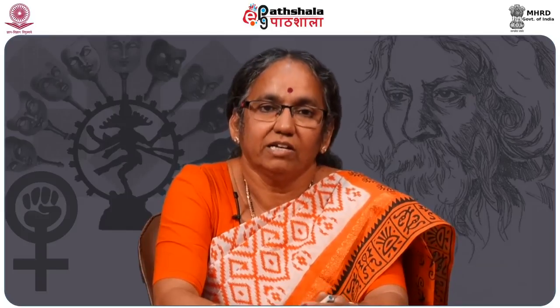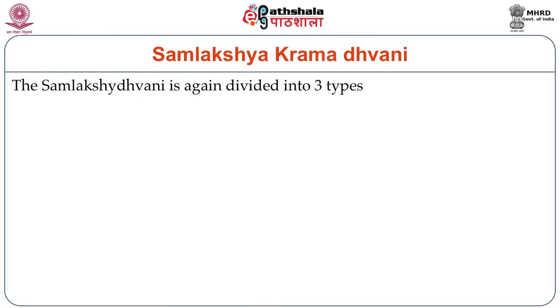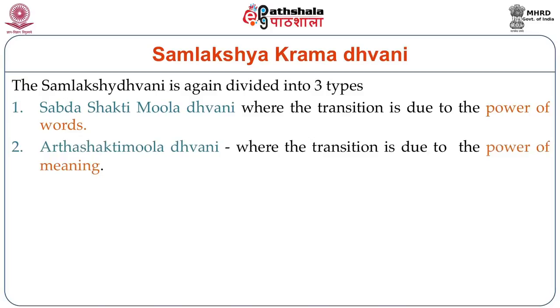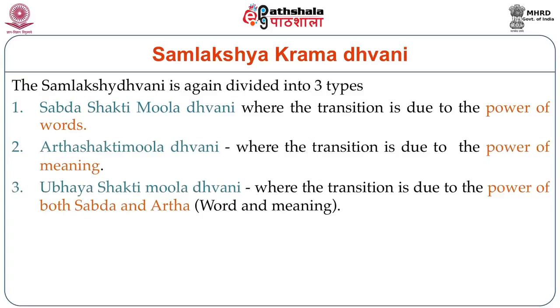These are a few of the varieties shown here. Anandavardhana himself describes 52 varieties of Dhvani, and he says that a few have been explained in Dhvanyaloka but there are many more prabhedas. Samlakshakrama Dhvani is again divided into three types: Shabdashaktimula Dhvani, where the transition is due to the power of words; Arthashaktimula Dhvani, where the transition is due to the power of meaning; and Ubhayashaktimula Dhvani, where the transition is due to the power of both Shabda and Artha.